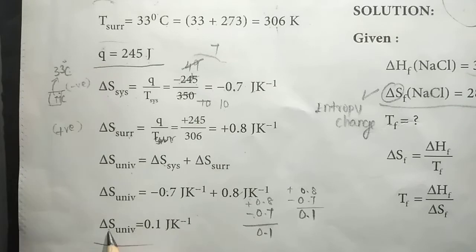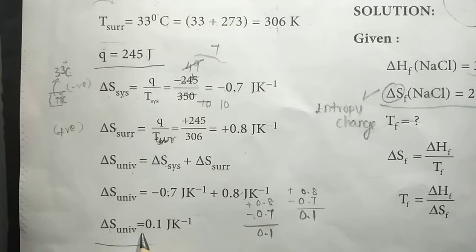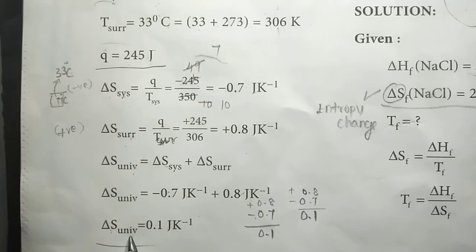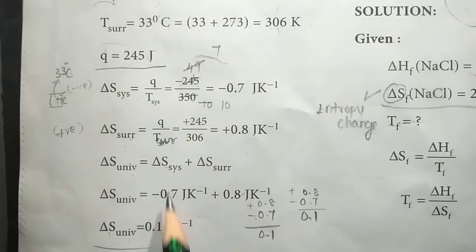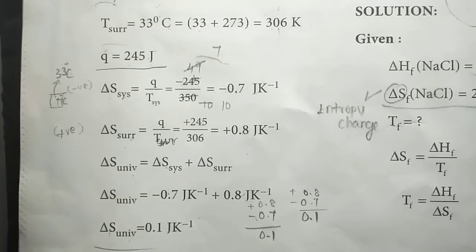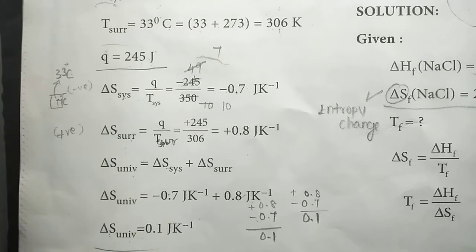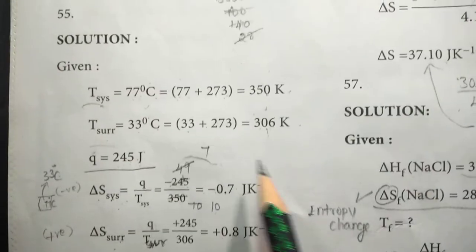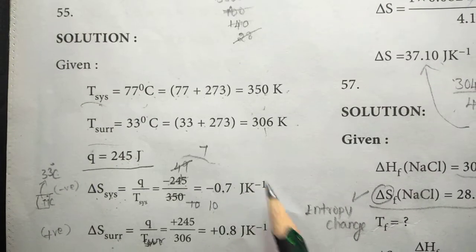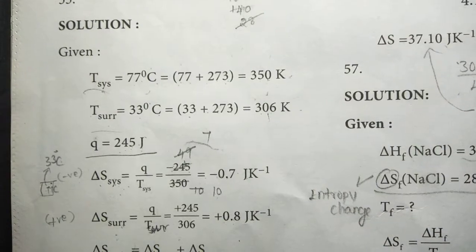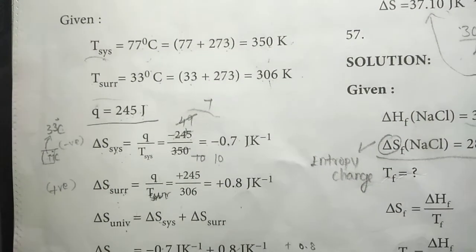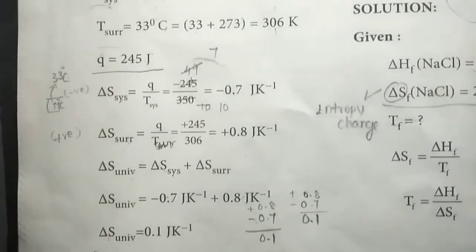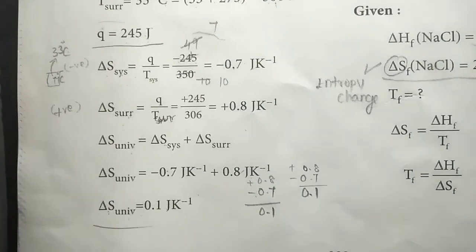So entropy change of the universe is the sum of the system and surrounding entropy changes. This was question 55. Please share this video, please like this video, and share it with your friends. Subscribe to Trisha Mathematics. Thank you for watching, I'll see you next time.